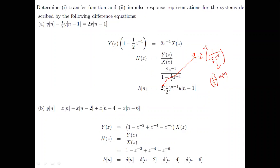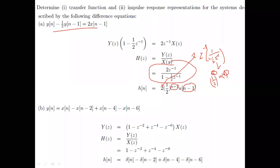Here the expression got multiplied by z⁻¹ in the Z-domain. A shift in the time domain corresponds to multiplication by z⁻¹ in the Z-domain, so every n is replaced by n−1: (1/2)^n becomes (1/2)^(n−1) and u(n) becomes u(n−1). It is a little tricky but from the difference equation we derived both the transfer function and the impulse response.